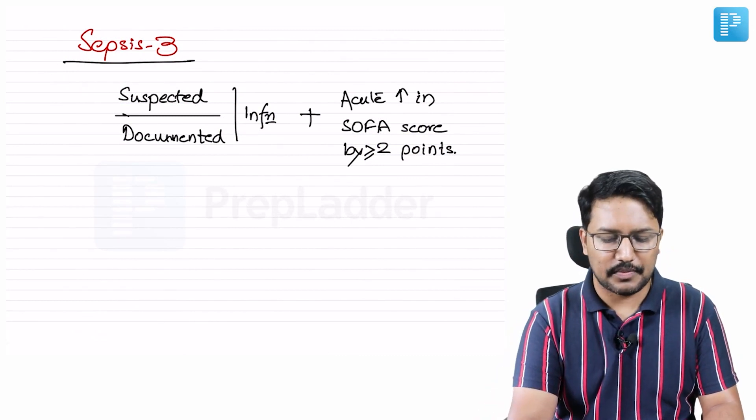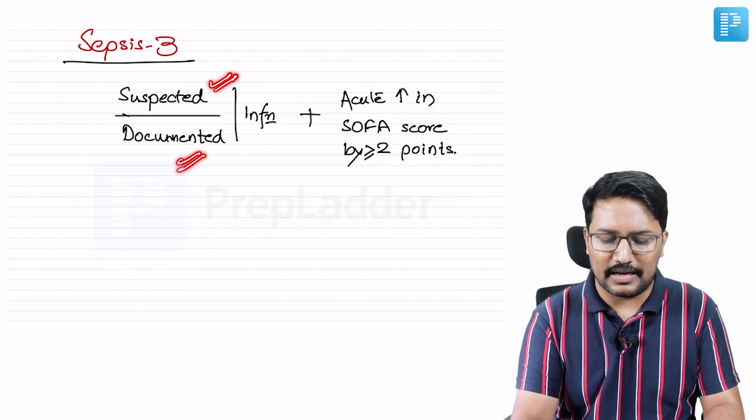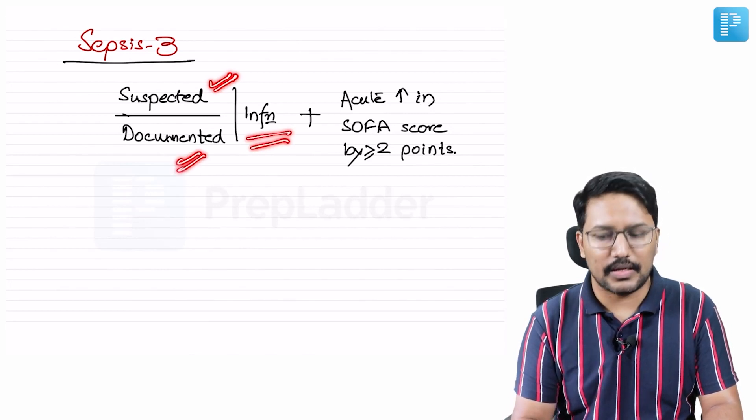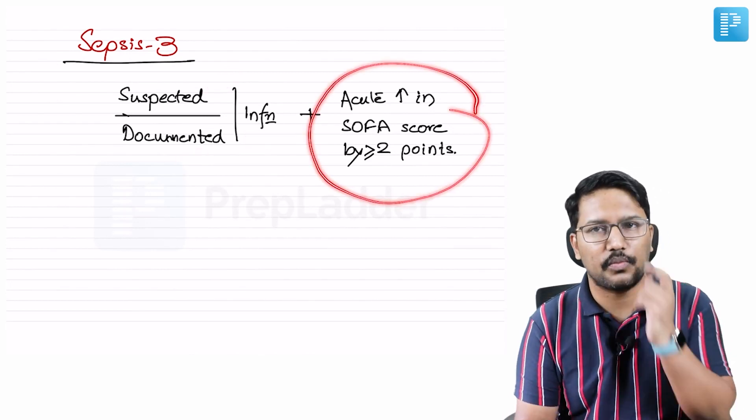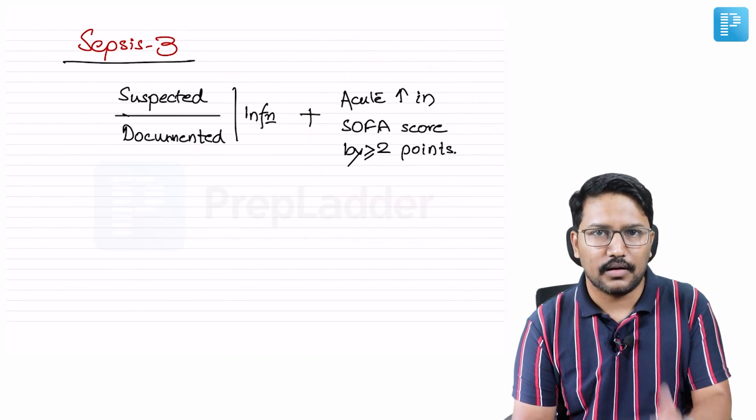Sepsis-3 defines sepsis as suspected or documented infection plus an acute rise in SOFA score by more than or equal to two points.